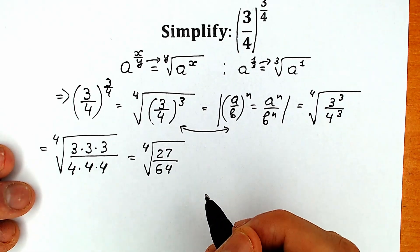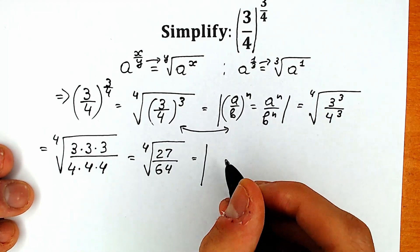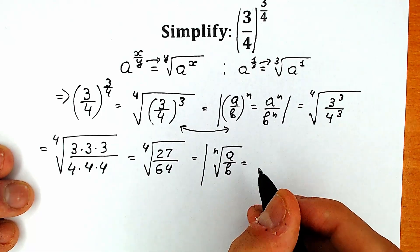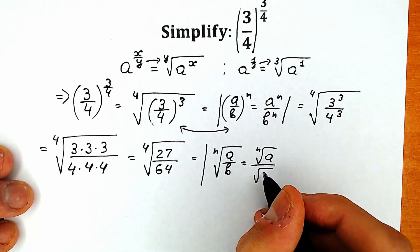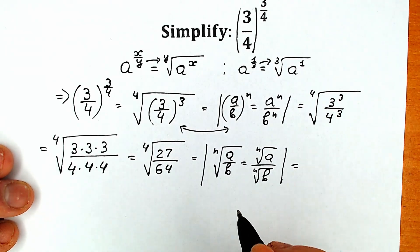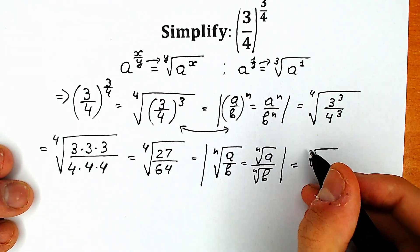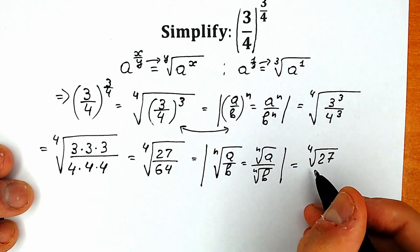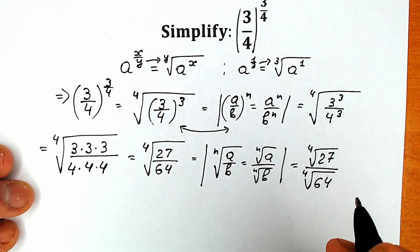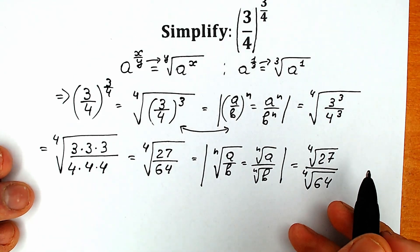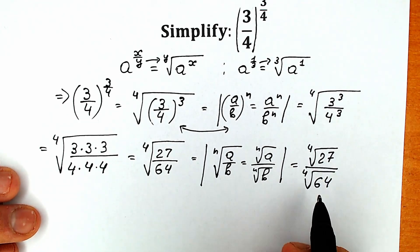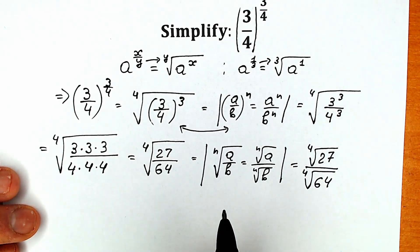Now the second really important property: when we have the nth root of a over b, we get the nth root of a over the nth root of b. We can split our numerator and denominator. So we have the fourth root of 27 over the fourth root of 64. The fourth root of 27 is hard to find directly, but let's work on the fourth root of 64.